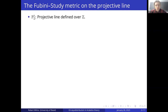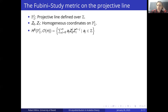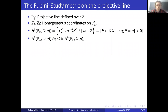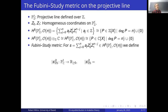It's better to work with a compact space, so we choose the projective line, where we have the Fubini-Study metric. The projective line defined over the integers is just P^1_Z. We take homogeneous coordinates z_0 and z_1 on the projective line. The global sections of the line bundle O(n) are homogeneous polynomials in the homogeneous coordinates of degree n, which we can identify with polynomials of degree n.